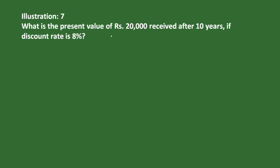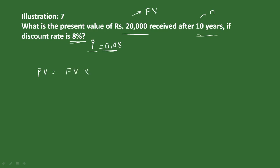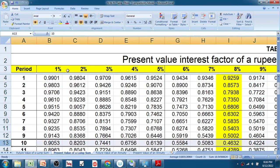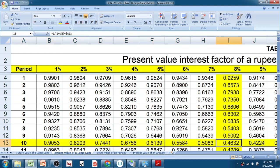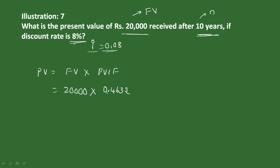What is the present value of ₹20,000 received after 10 years if the discount rate is 8%? Future value is 20,000, n equals 10, and i equals 0.08. Present value equals future value multiplied by the present value interest factor. At 8% after 10 years, the PVIF is 0.4632.